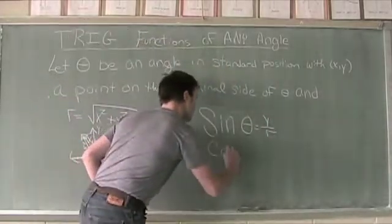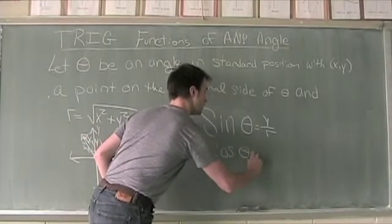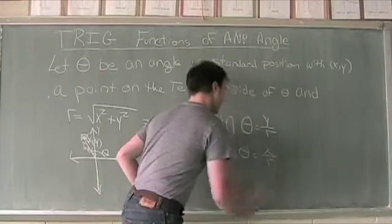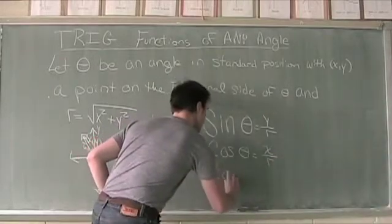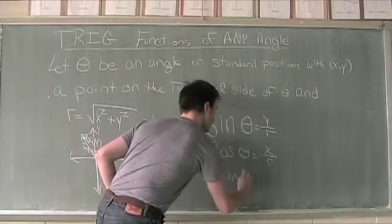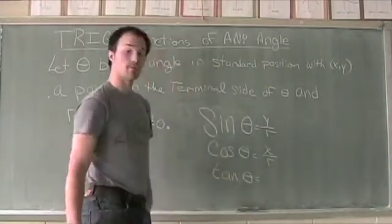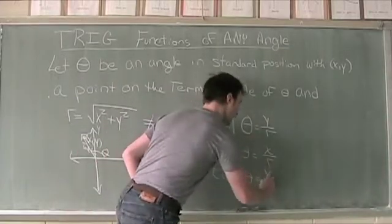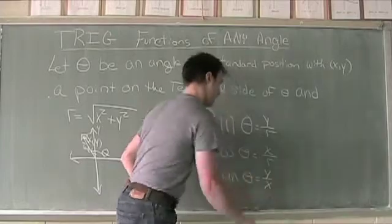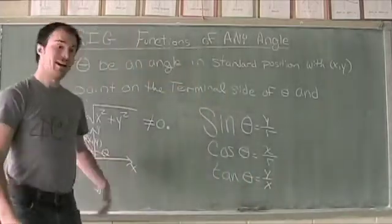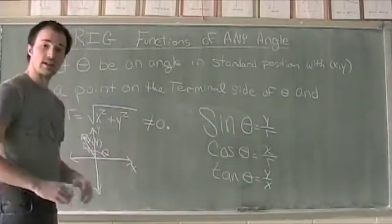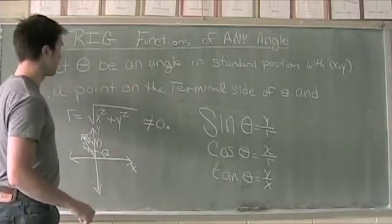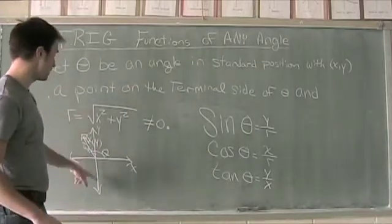Cosine of theta is equal to x divided by r, and tangent of theta is equal to y over x. This is the basic premise for the next few videos. Theta is the angle in standard position and we're going to be looking at angles in all different quadrants.